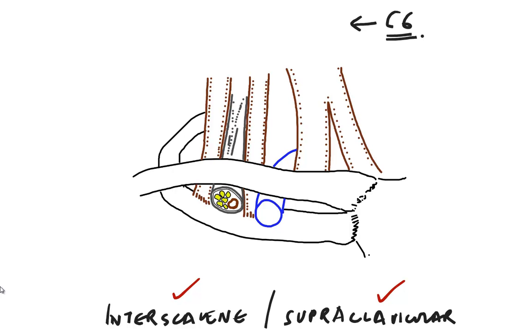At this level is the sternocleidomastoid, which has two heads: the sternal head and the lateral clavicular head. Next, we encounter the scalene group of muscles.